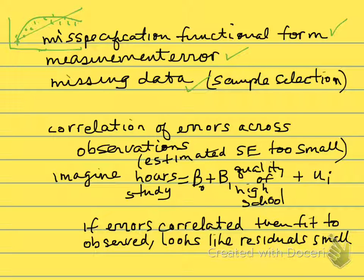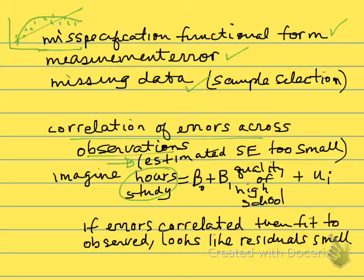Finally, we come to when our standard errors are estimated incorrectly. When we have correlation of errors across observations, we'll end up with a situation typically where our estimated standard error will be too small. I want to show you this very briefly. Imagine we have a regression where the amount of hours people study in a week, your study habits, is a function β₀ + β₁ times the quality of your high school. Kids from high-quality high schools maybe study more because they've been trained in spending a lot of hours studying. If we took a sample of students at a university from different quality high schools, we'd estimate β₁ with an associated standard error and conduct hypothesis tests.